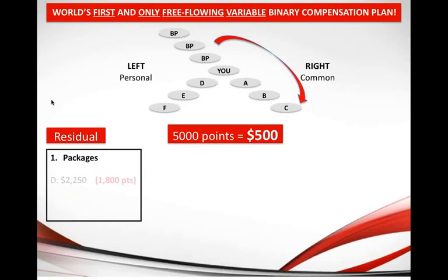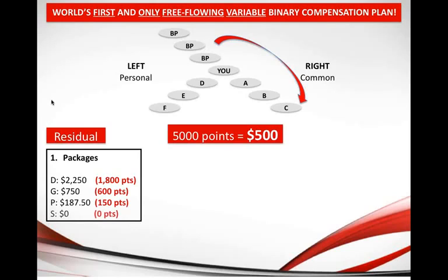Cash Machine Number One is called packages. Anyone who chooses the diamond package gets two thousand two hundred and fifty dollars of products included. To convert dollars to points, you multiply by 0.8, so that equals one thousand eight hundred points. A gold member gets seven hundred and fifty dollars which is six hundred points. A plankton member gets one hundred and eighty-seven dollars and fifty cents which is one hundred and fifty points. A silver member gets zero dollars which equals zero points.